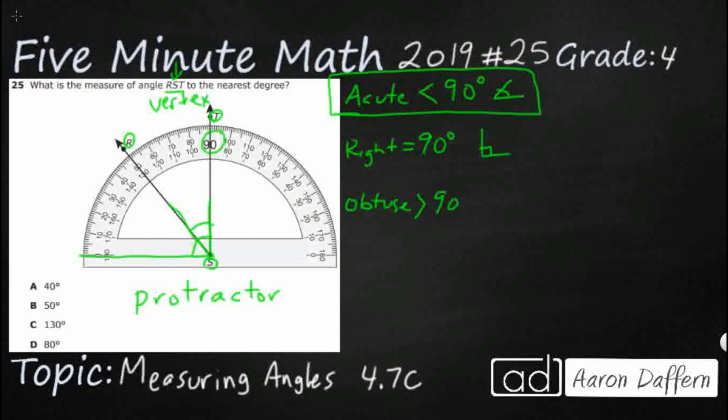Obtuse is going to be greater than 90. So anything that is kind of larger, looks something like that. So honestly, even just doing that, we can get rid of C 130, simply because we know that our acute angle needs to be less than 90.